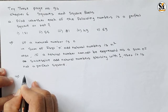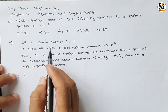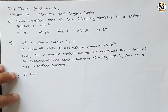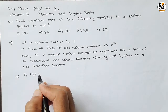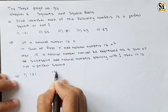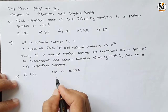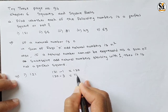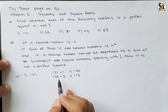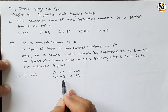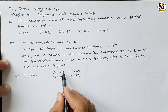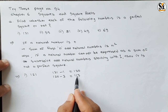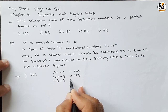The problem asks: find whether each of the following numbers is a perfect square or not. To find this, subtract odd numbers from the given number starting with 1. Take the first number, 121. Subtract 1: 121 minus 1 gives 120. Then subtract the next odd number, 3: 120 minus 3 gives 117.